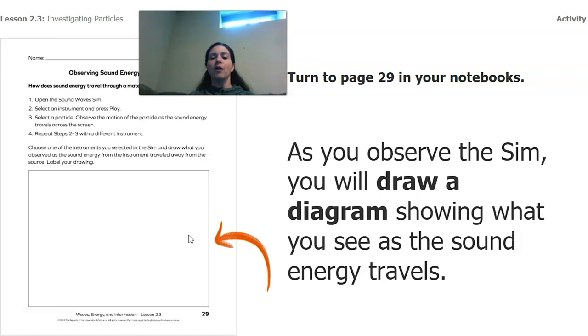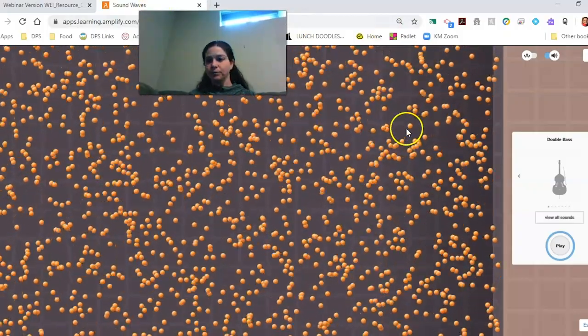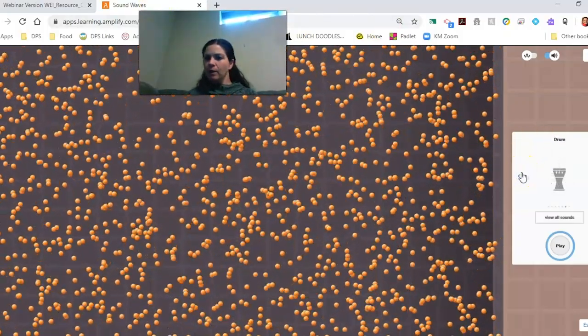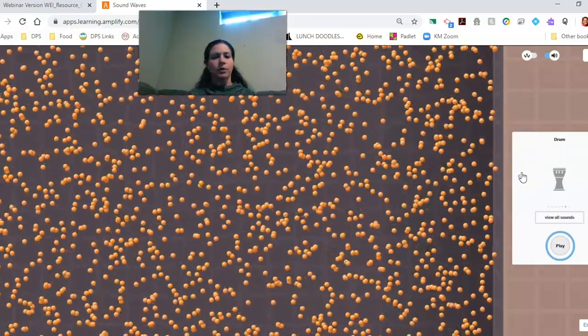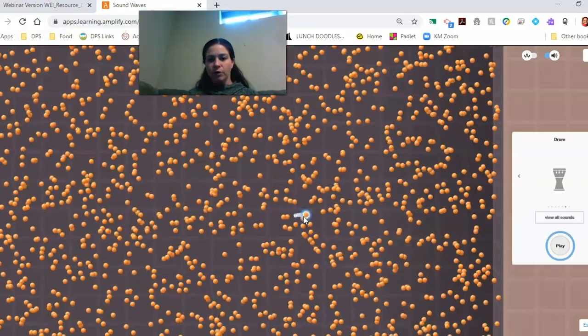We're going to draw a diagram of what we're seeing when the sound is traveling. So I'm going to go into the sim. Let's see what instrument we want to do today. I don't think we've done a drum yet, so we're going to do a drum.